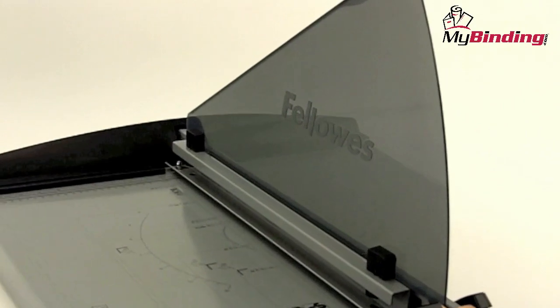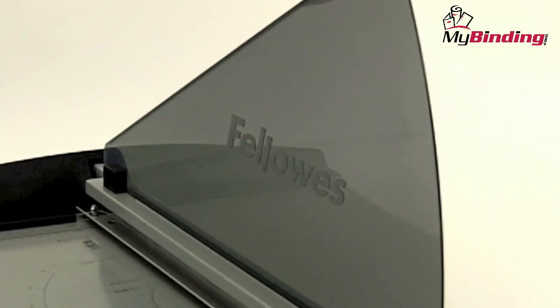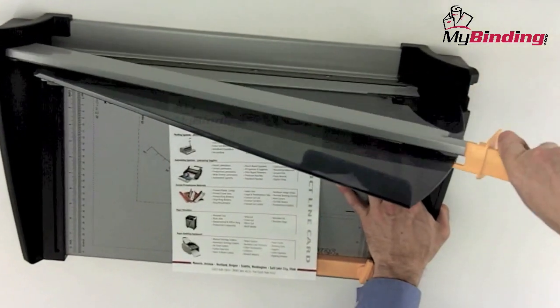This large plastic shield that you see is a safety feature. The blade must be all the way up to release your papers.